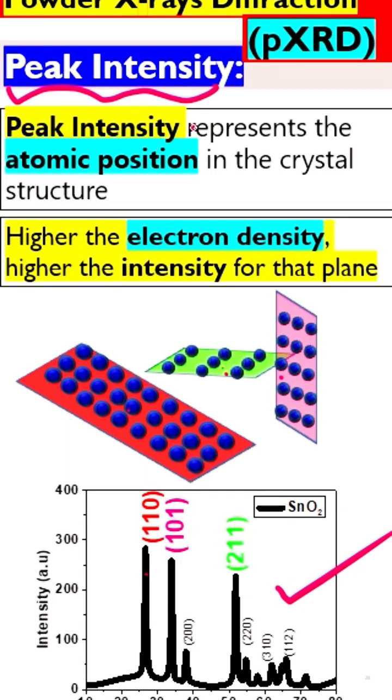Peak intensity represents the atomic positions. You see these are basically atoms. So these represent the atomic position in the crystal. If we have more atoms, we will have the higher peak. The peak intensity will be higher.